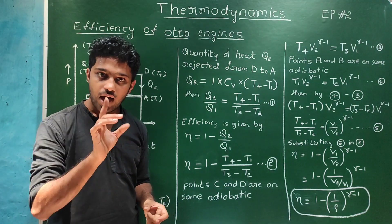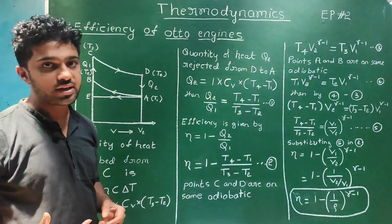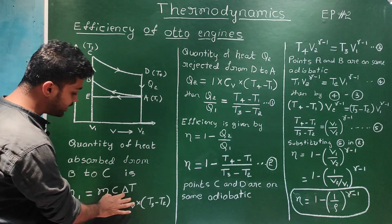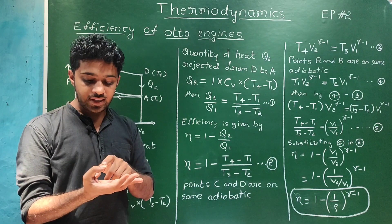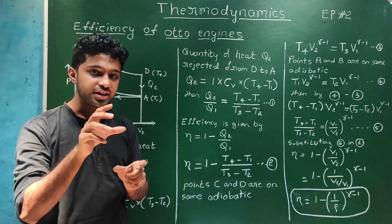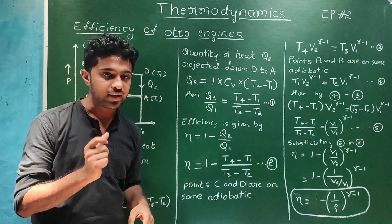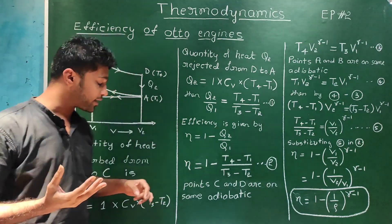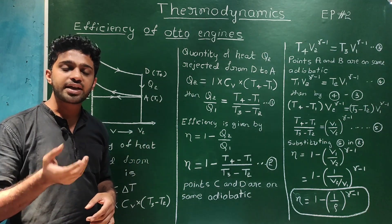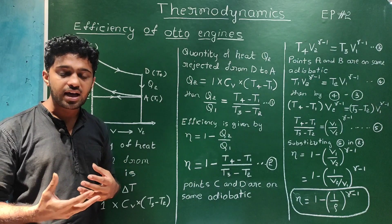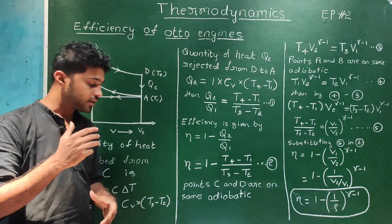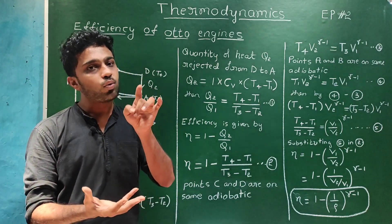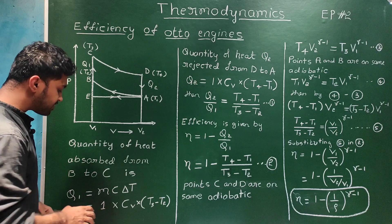Let's start the efficiency derivation. The heat equation uses mass of the fuel M, specific heat C, and delta T for change in temperature. We consider the mass of the fuel as 1 kg. The specific heat at constant volume is represented by Cv.